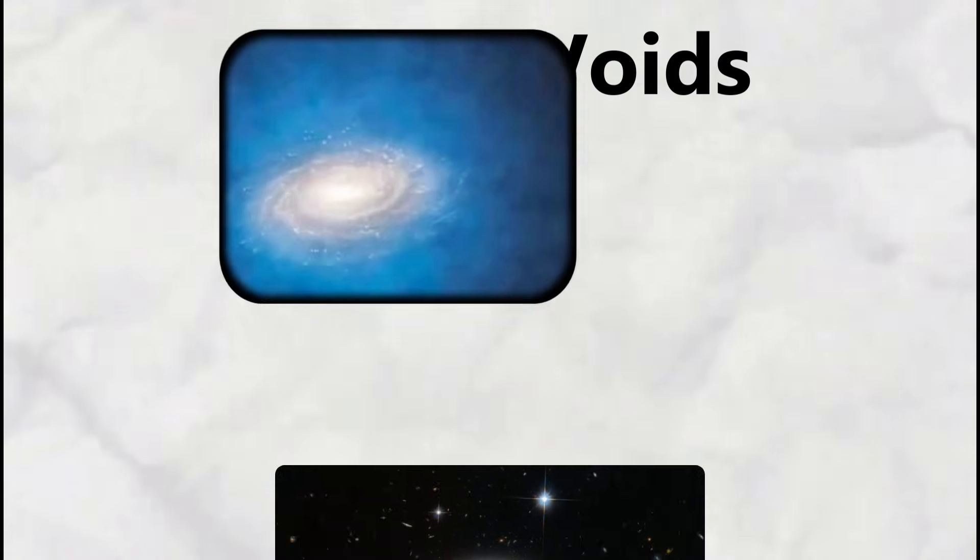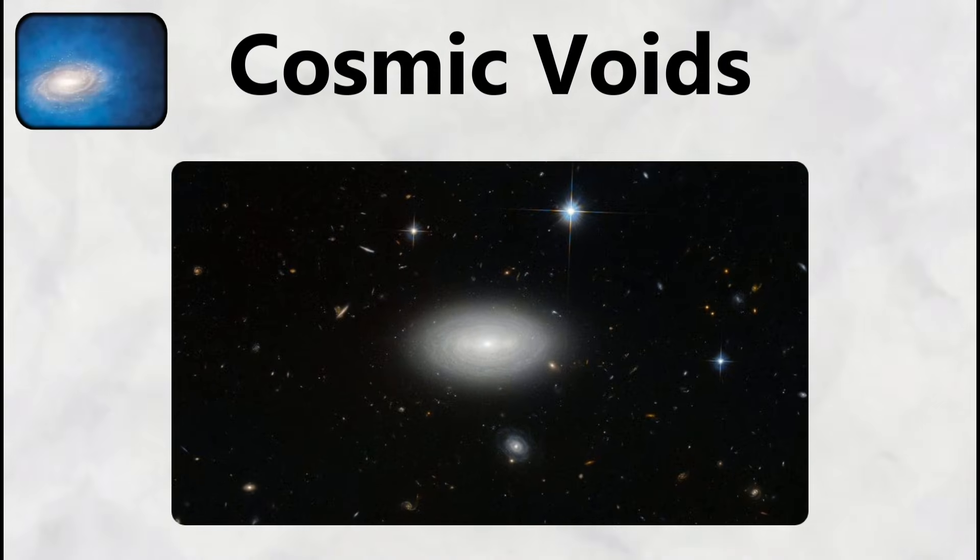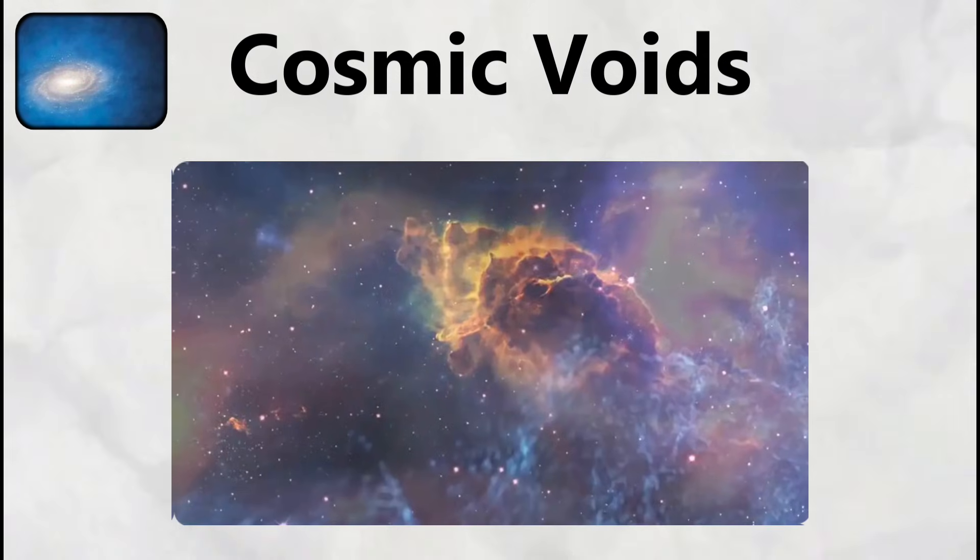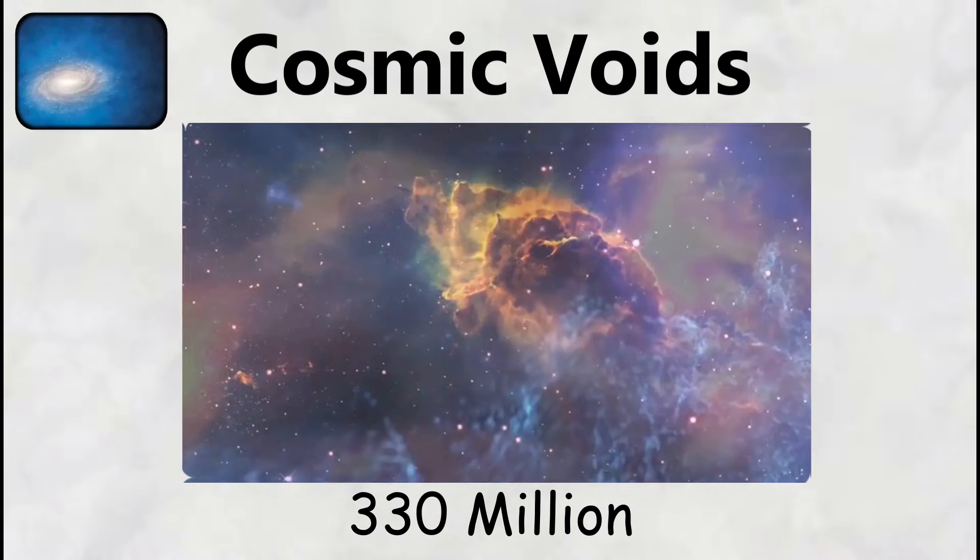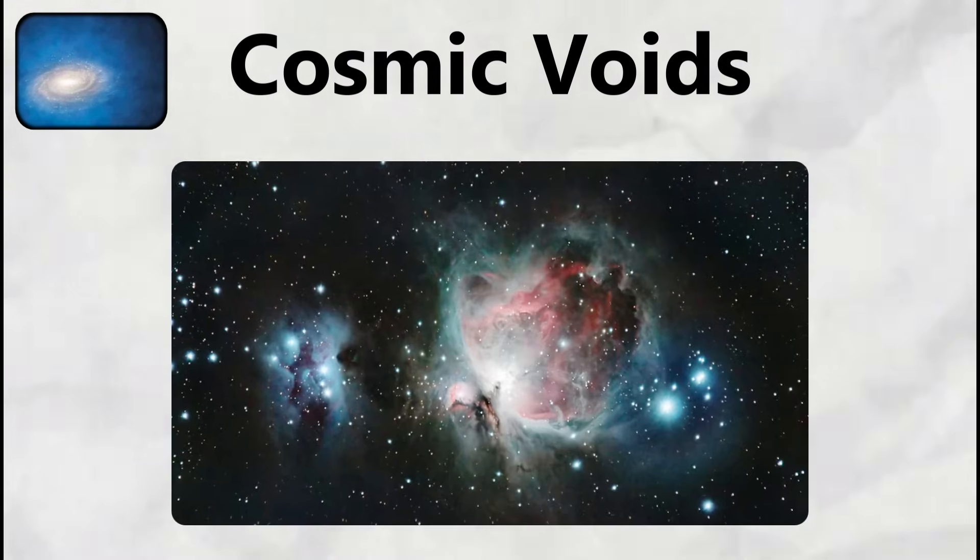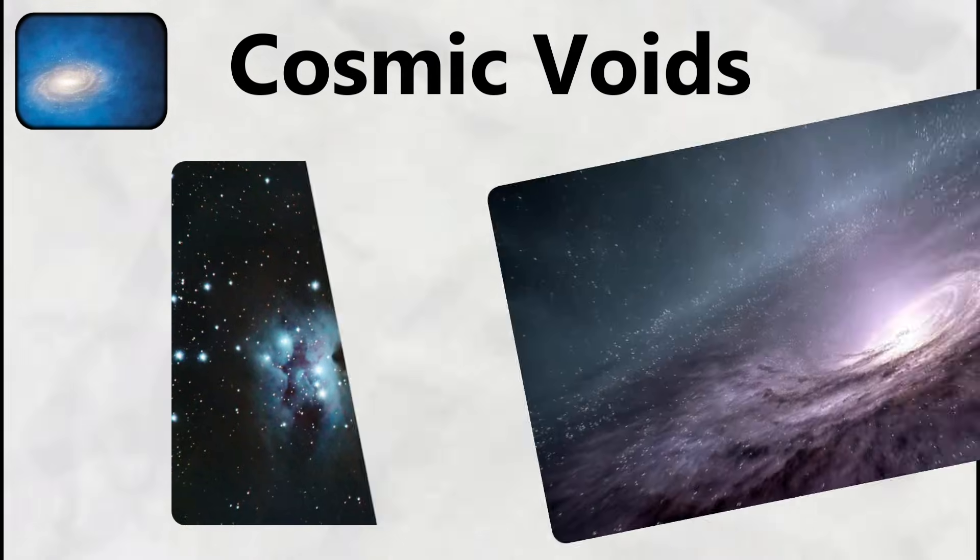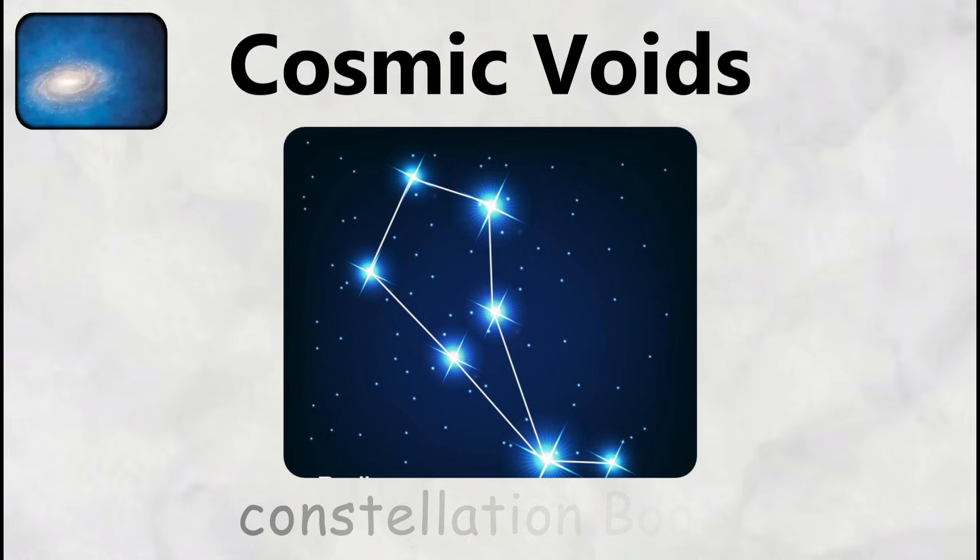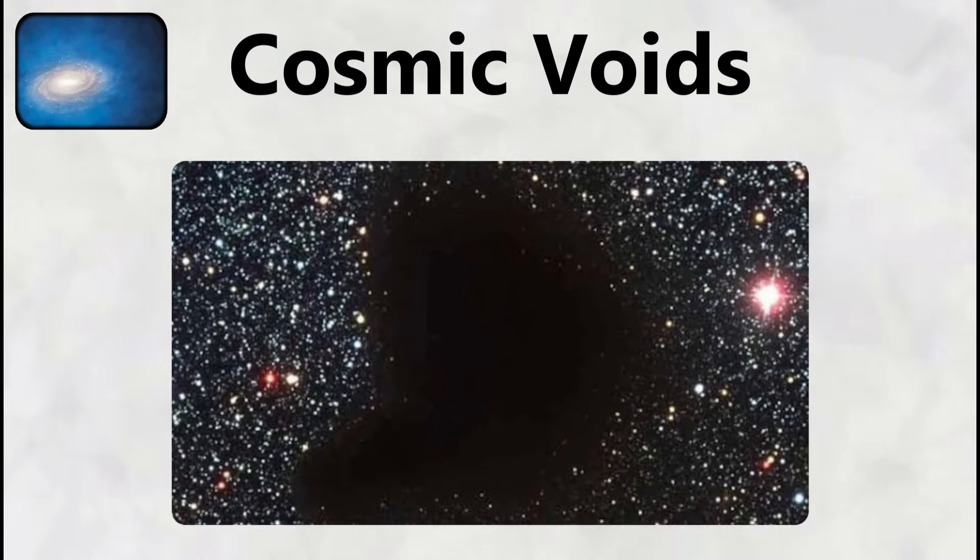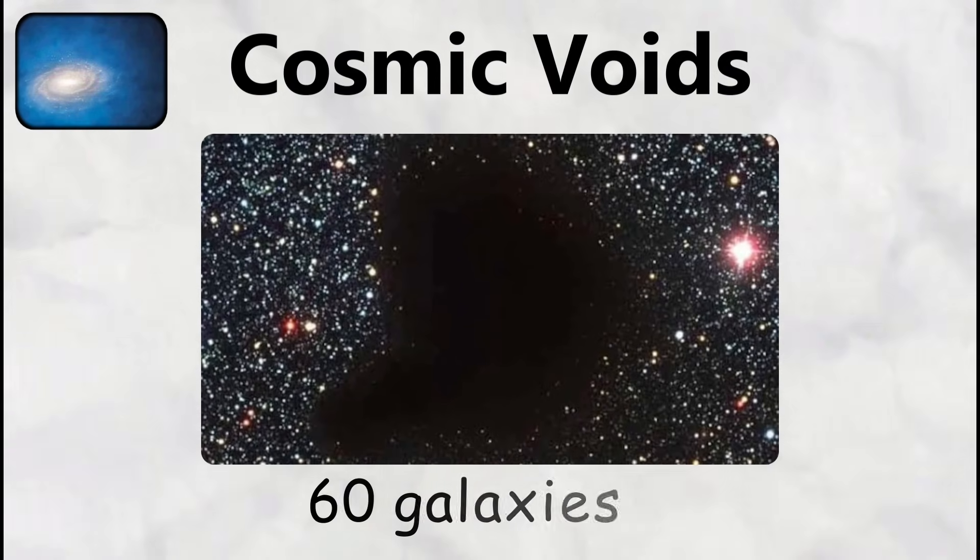Cosmic Voids. The Boetes Void represents one of the most unsettling discoveries in modern astronomy. This enormous region of space spans roughly 330 million light-years in diameter, making it one of the largest known voids in the universe. Located approximately 700 million light-years from Earth in the constellation Boetes, this cosmic emptiness contains only about 60 galaxies.